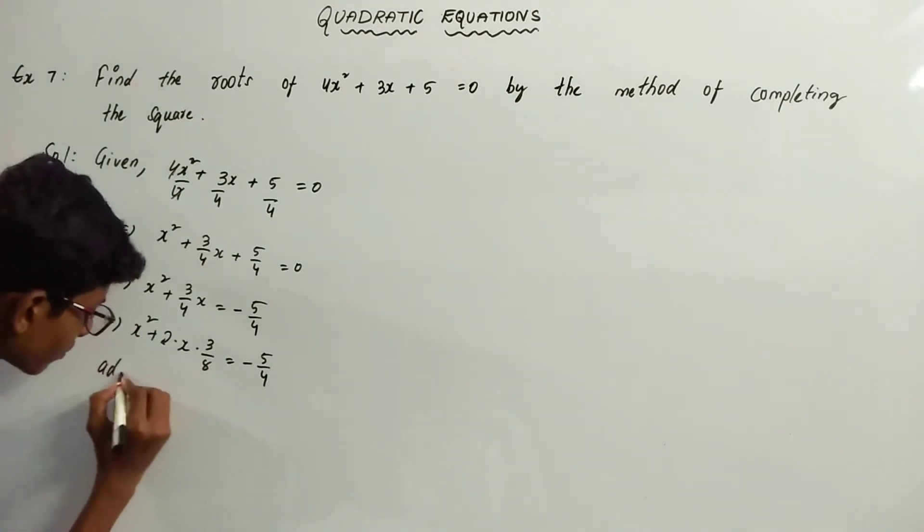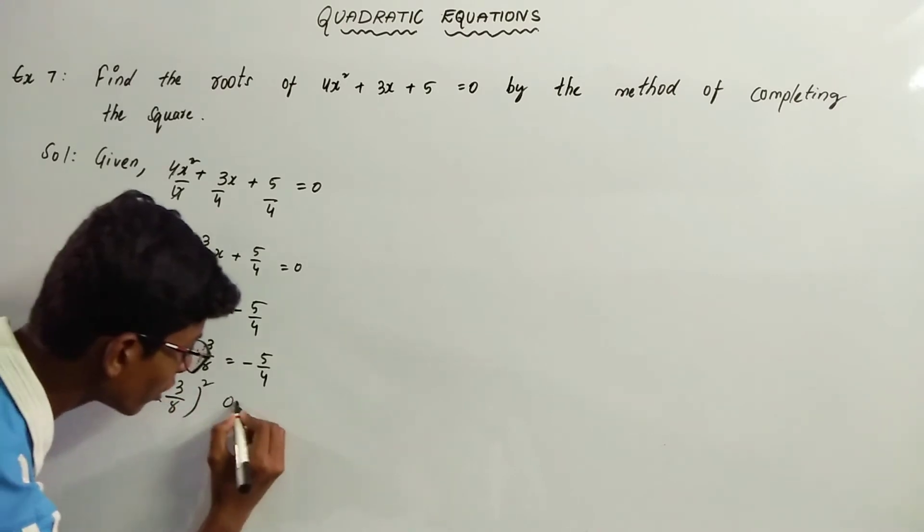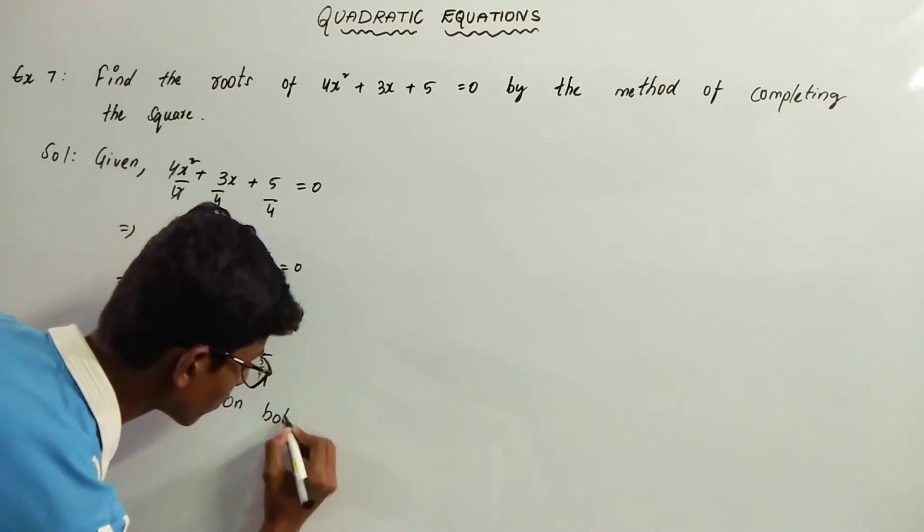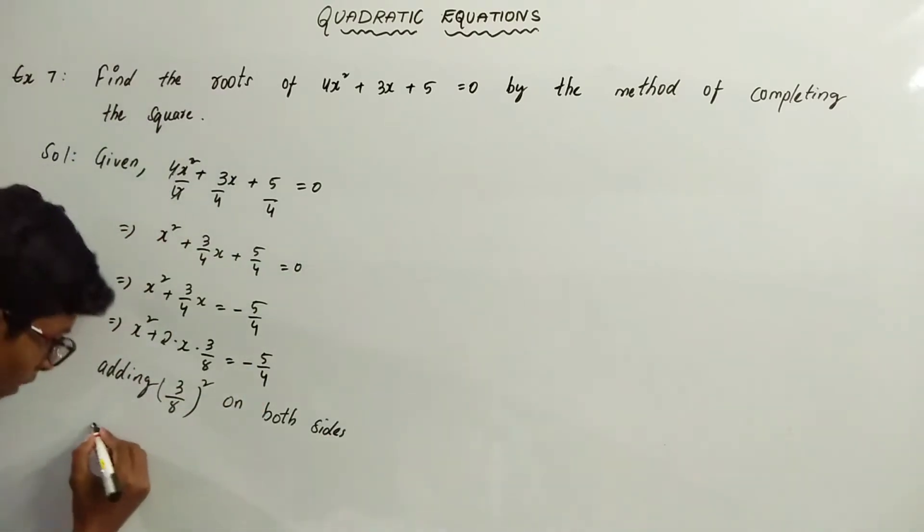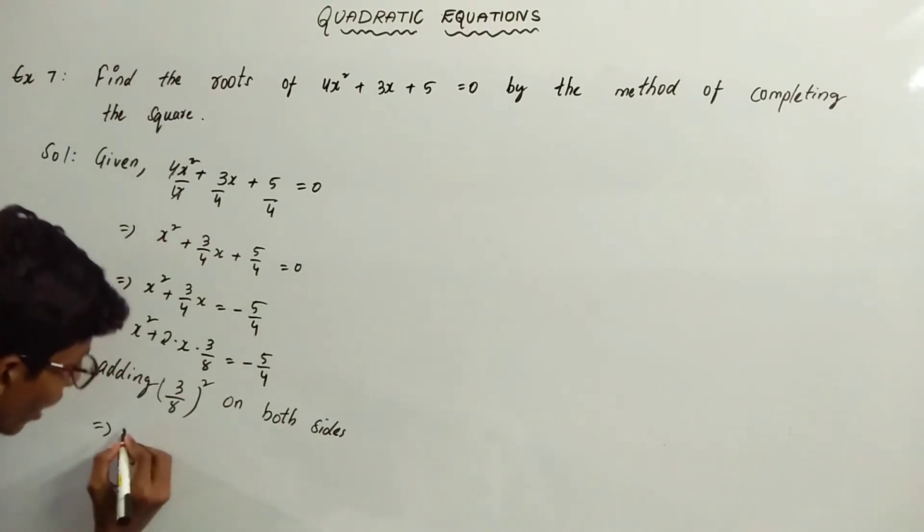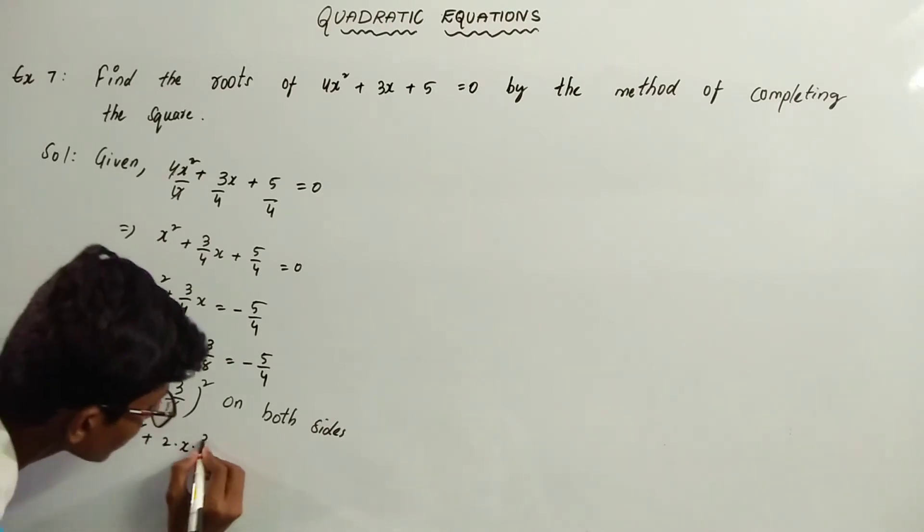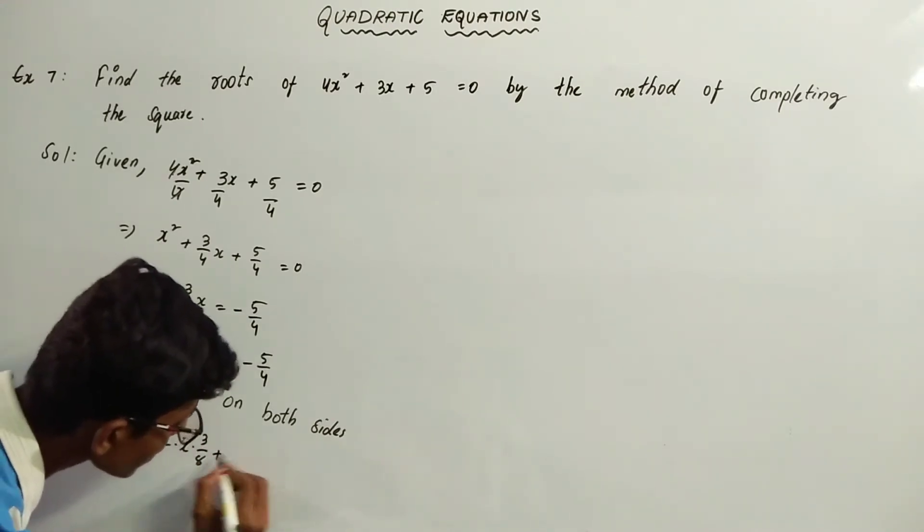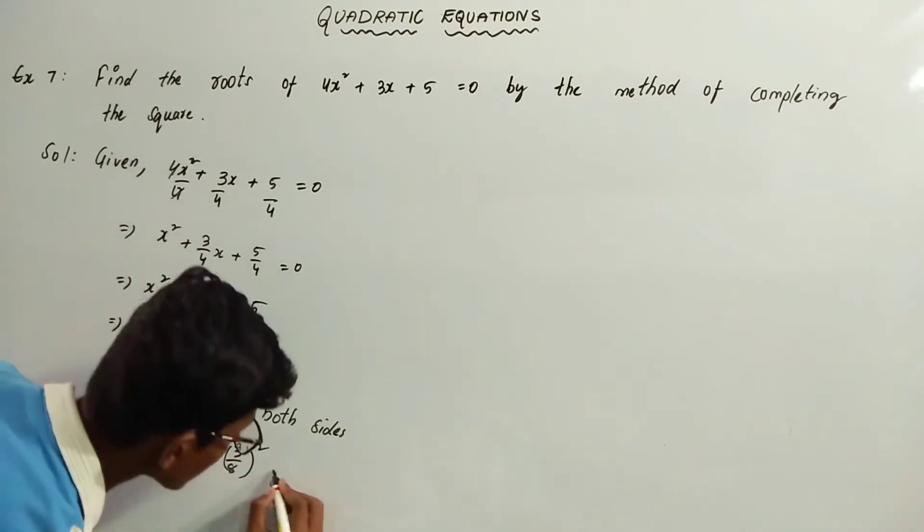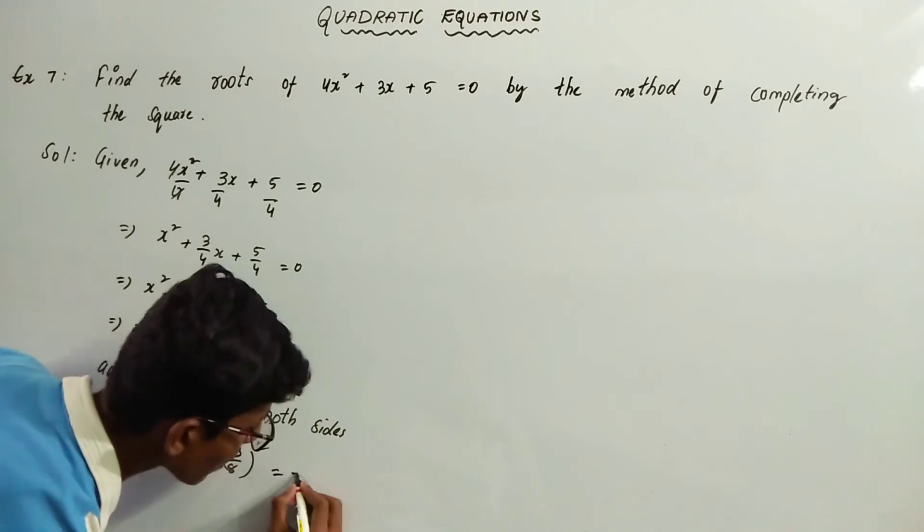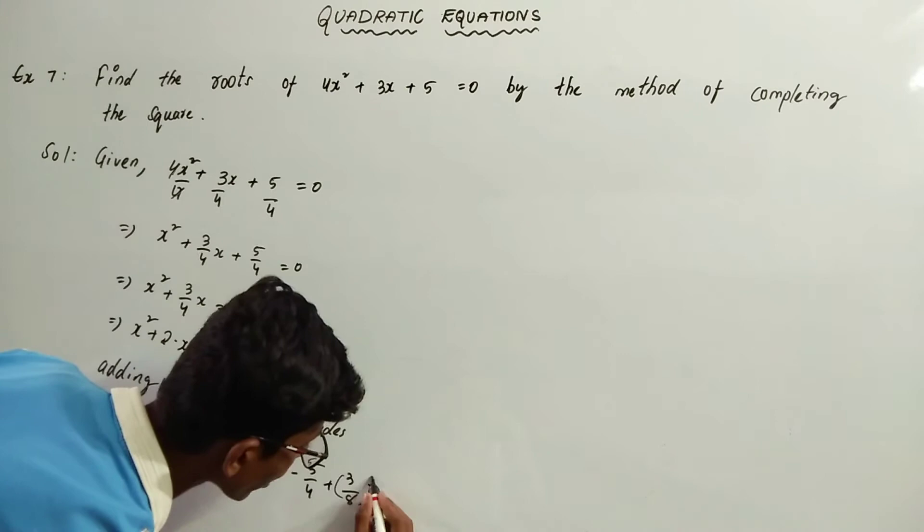Adding (3/8)² on both sides, we get x² + 2 · x · (3/8) + (3/8)² = -5/4 + (3/8)².